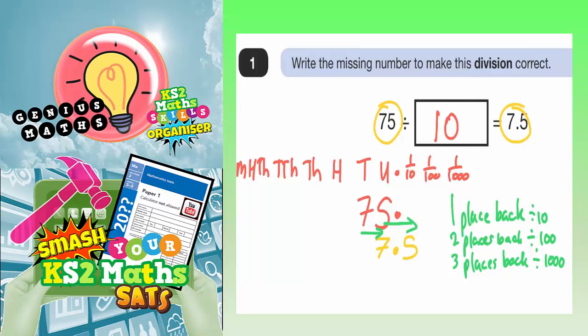For example, if this question actually said 75 divided by 100 instead, then we'd need to move the digits back an extra place. Because they've already moved one place back to get to 7.5, they'd move an extra place back. The 7 would go into the tenths column, the 5 would go into the hundredths column, and we'd have to fill in the units column with a 0. So it'd be 0.75 — that would be the answer to 75 divided by 100.